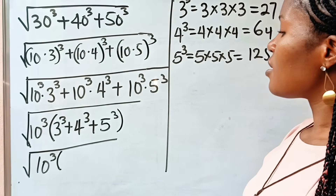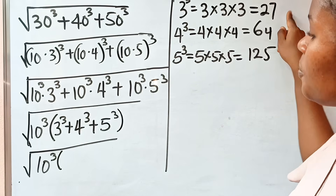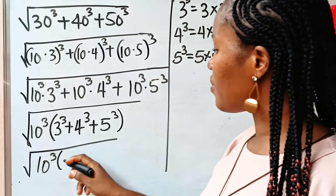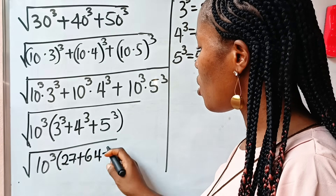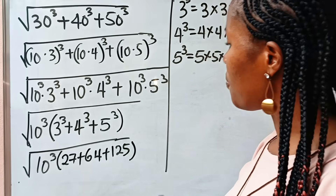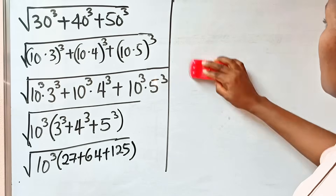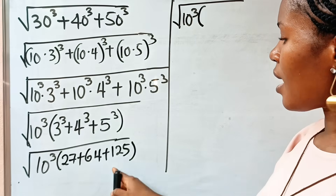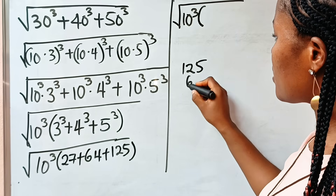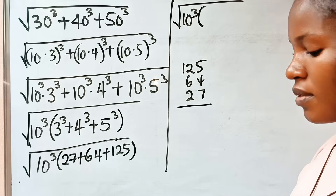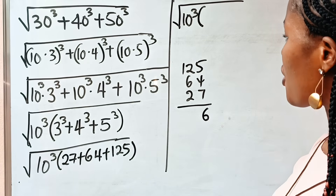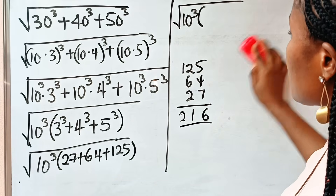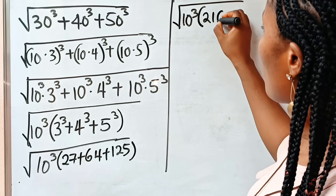So we are going to replace 3 to the power of 3 with 27, substitute 4 to the power of 3 as 64, and 5 to the power of 3 as 125. So what we have is 27 plus 64 plus 125. Now let's add together: 125 plus 64 plus 27. 5 plus 4 plus 7 is 16, carry 1. 6 plus 4 plus 2 plus 1 is 11, carry 1. So we have 216.